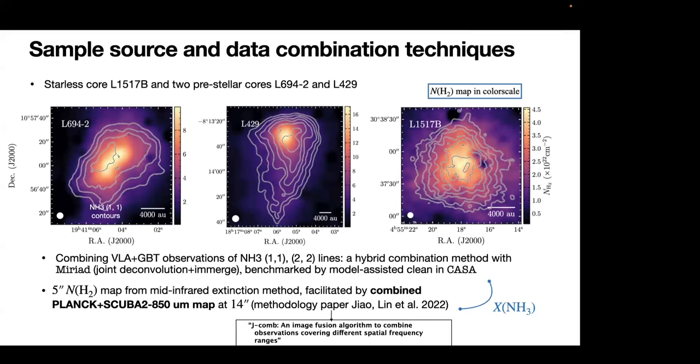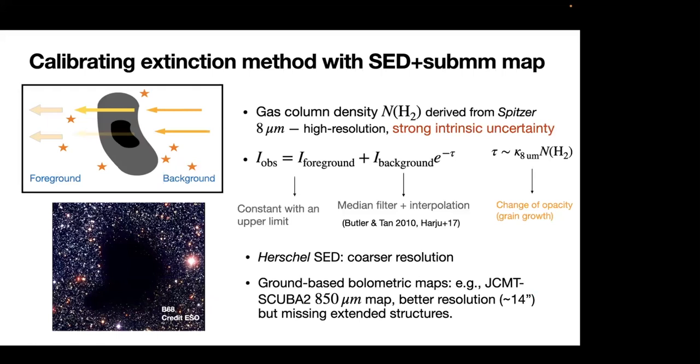For this method, we actually update the conventional one. Because we use some benchmark in order to make sure that the extinction method for different cores are giving consistent results to be compared with. So for the methodology paper, where we compute this combined sub-millimeter map in order to get the extinction method, I refer you to this methodology paper we published last year. It is a method which can be adopted for combining the ground-based bolometer observations with the space telescope observations of the continuum image taken towards the molecular clouds.